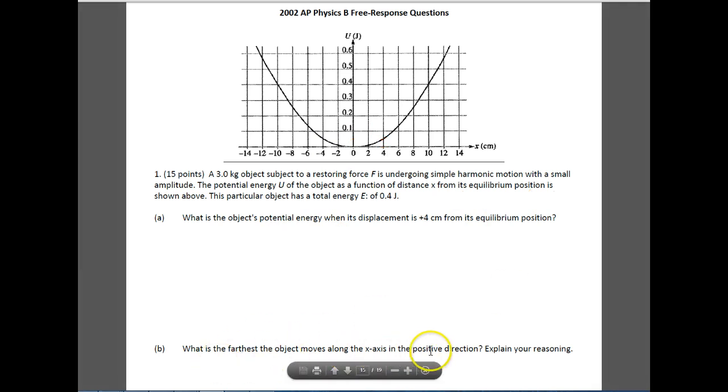It says, what is the furthest the object moves along the x-axis in the positive direction? Remember, the most energy that you could have that's potential is going to be 0.4. So we're going to take this and just scratch it off, and we're going to do the same thing over here. And so the furthest it can go in the positive direction is going to be this 10 centimeters, because that's where it would have just potential energy.